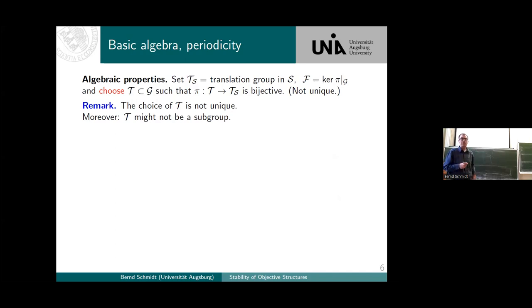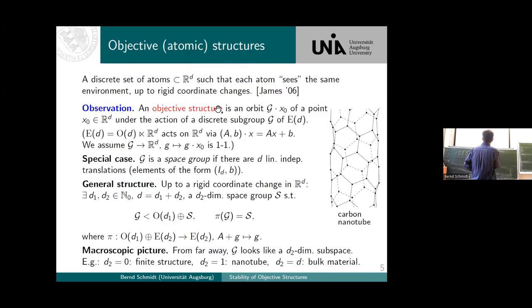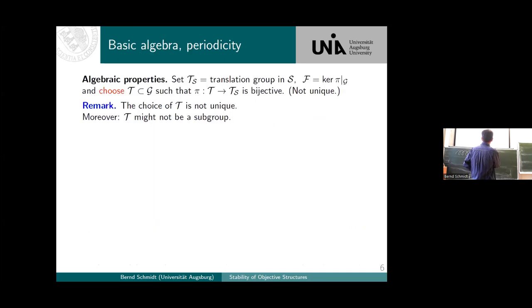Now let's try to do some math, heading towards a Fourier analysis on such objects. The difficulty is that in these general groups we don't have translations, and translations are very nice for Fourier transforms since they give easy characters. But what we do have is a surrogate for translations: in the smaller group S, which is a space group, we have at least d_2 independent translations. So we can take the translation group of this and find a set T of elements that act as translations in the bigger group.